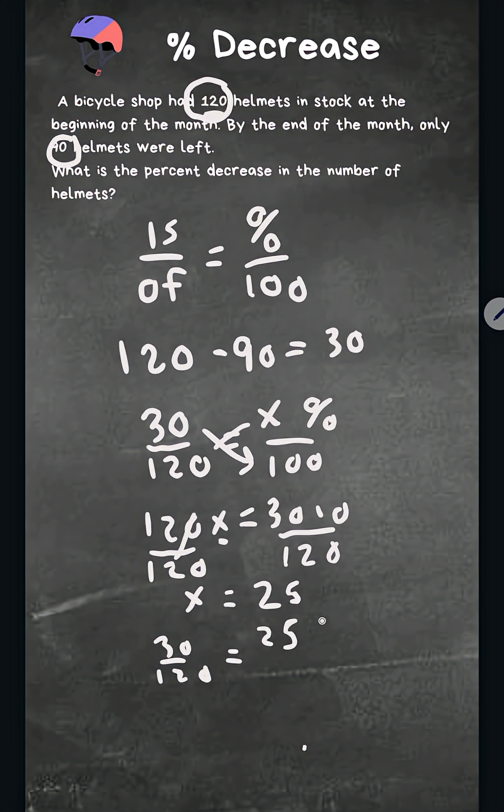Remember, we were solving for x, 25% over 100. So the helmets decreased by 25%. I hope that was helpful.